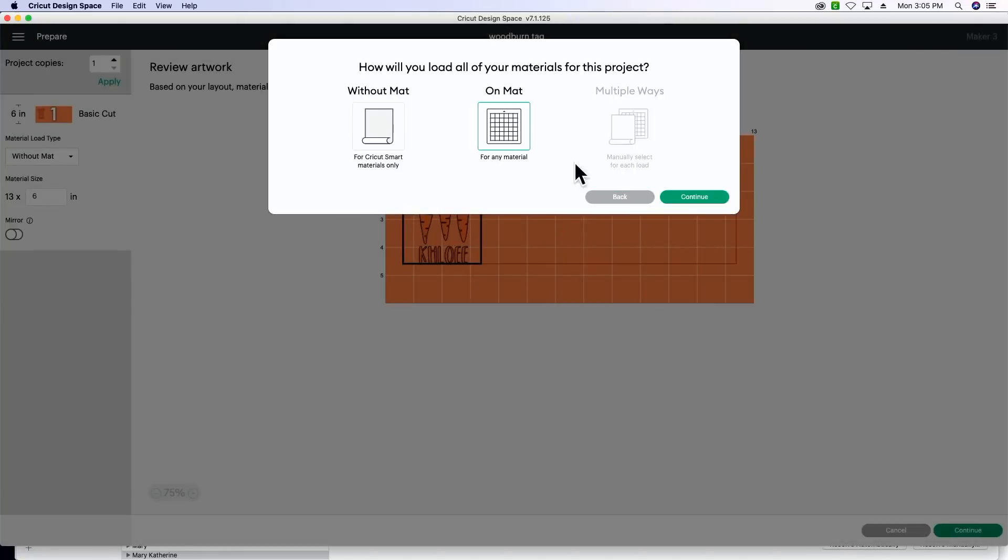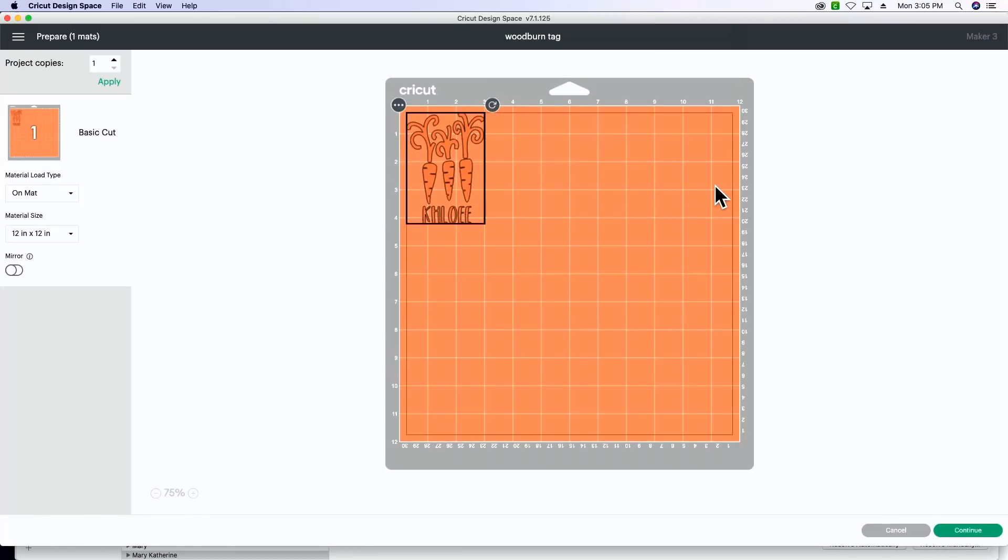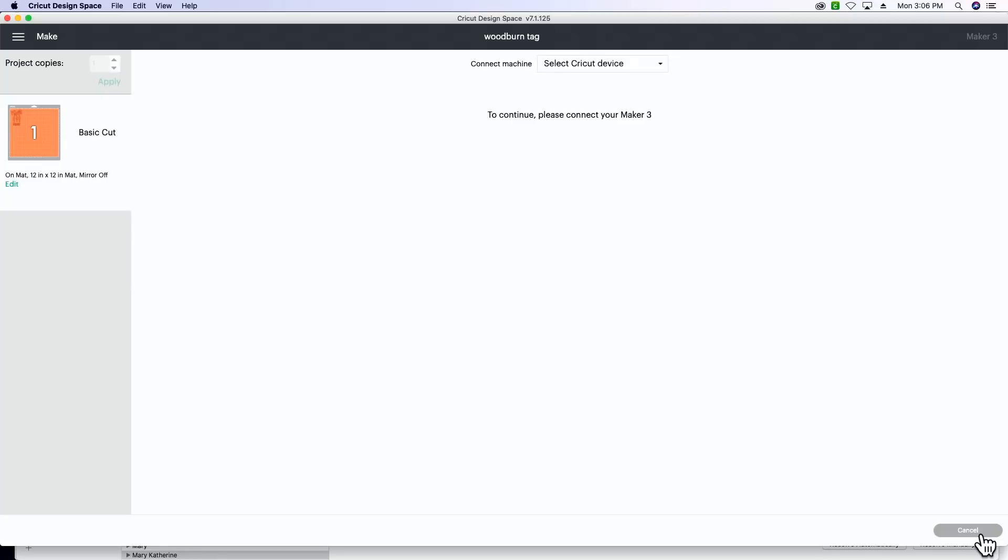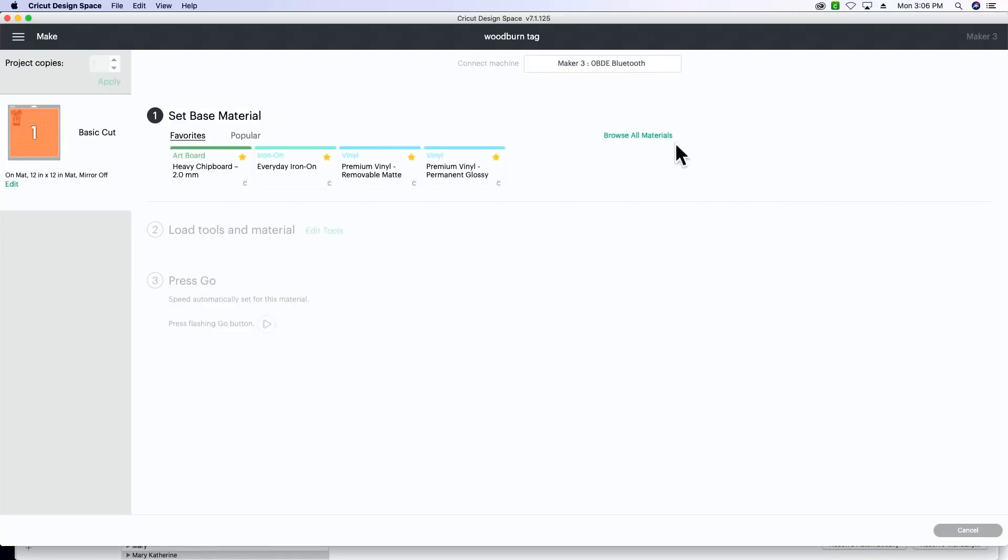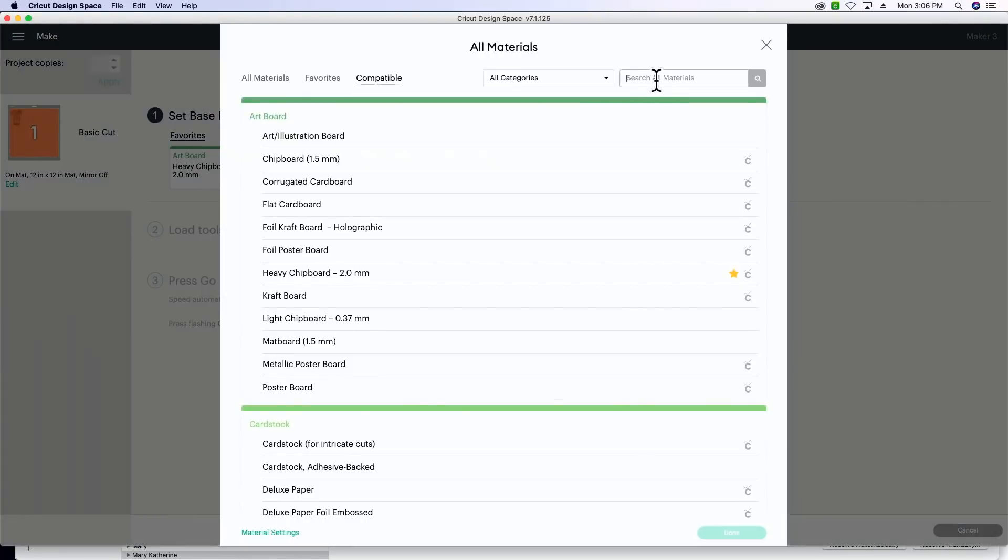After you do that, you're going to go ahead and make it. We're going to select on mat, continue. We're going to be cutting this on stencil vinyl. You don't need to mirror it when you're using stencil vinyl. Select your Cricut.